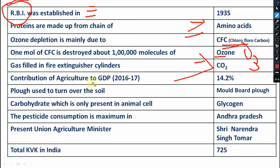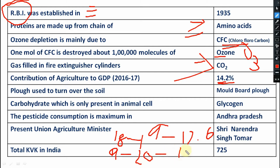Contribution of agriculture to GDP — very important for exams. In 2016-17 the GDP contribution was 14.2%. In 2018-19 it was 17.6%. In 2019-20 it was about 18.4%. And in 2020-21 the most recent figure was 20.2%. Please remember these figures.